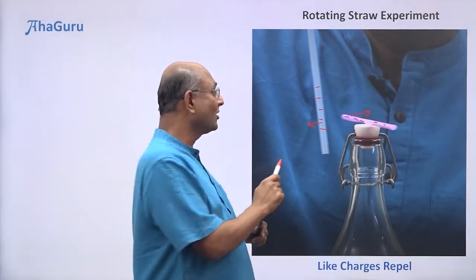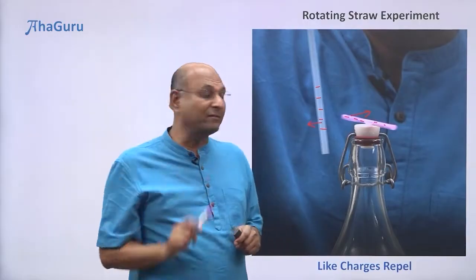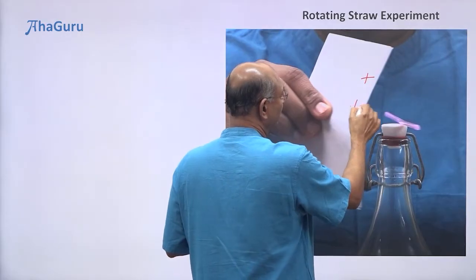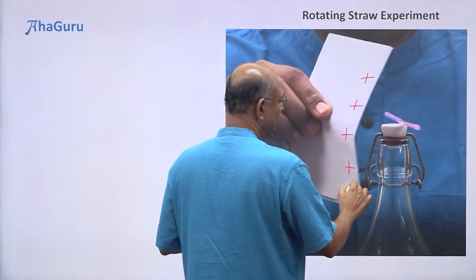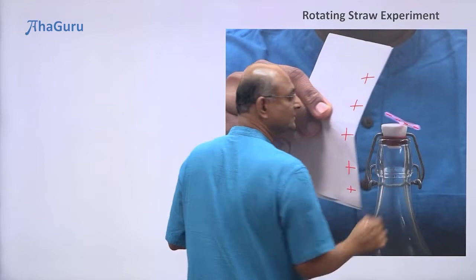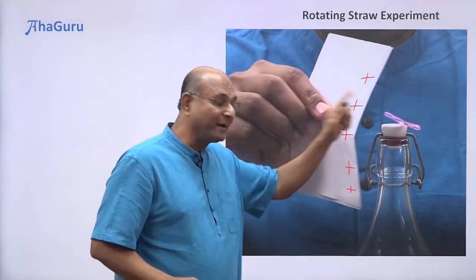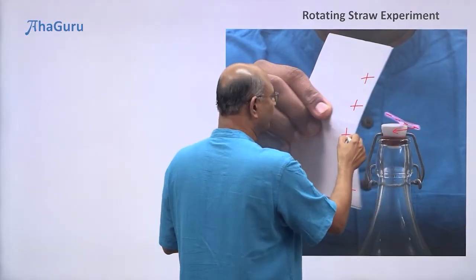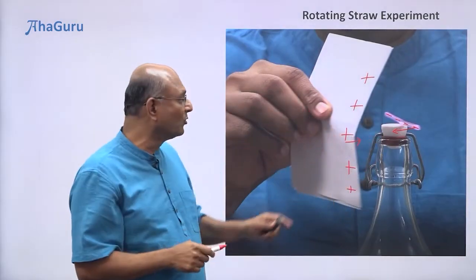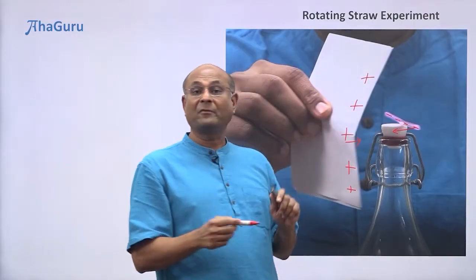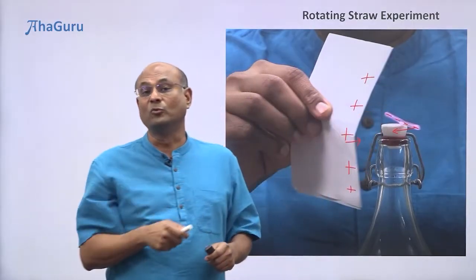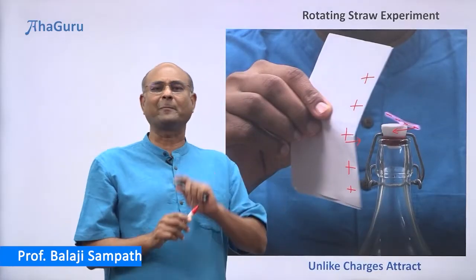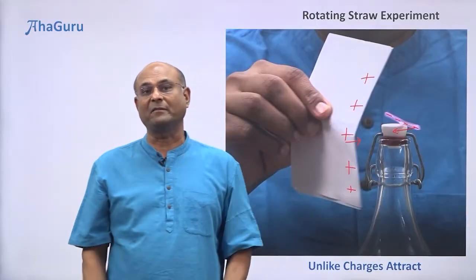We also saw that when I brought the paper — which is positively charged — near the straw, which is negatively charged, the straw was attracted toward the paper. The paper pulls the straw and the straw pulls the paper, but since I'm holding the paper it doesn't move — the straw feels the force and moves toward the paper. So unlike charges attract. This simple experiment demonstrates all of these ideas that we have learned.